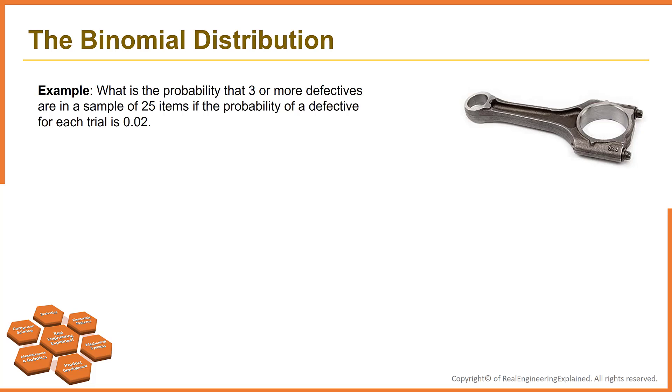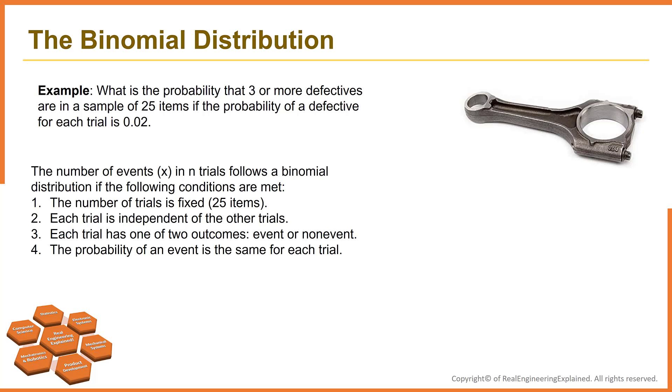Let's look at another example. What is the probability that three or more defective items are in a sample of 25 items if the probability of a defective part for each trial is 0.02, or 2%.